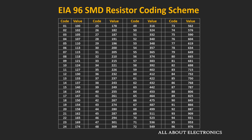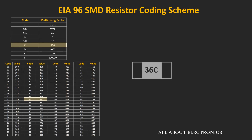Using these two tables, we can find the resistor value for this coding scheme. For example, if the code is 36C: the first two digits '36' correspond to a value of 232, and the last letter 'C' gives a multiplying factor of 100. So the resistor value is 232 × 100, which equals 23.2 kΩ.